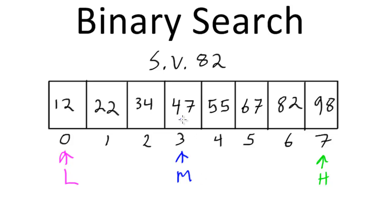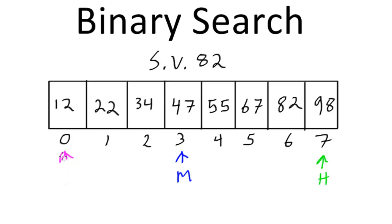We do a comparison between the value at the midpoint — which is 47 — and our search value. They're not equal, so we check whether the search value is greater than or less than the midpoint value. Since 82 is greater than 47, we update low to being one more than the midpoint. If instead we were looking for 22, the search value would be less than the midpoint and we would update high to one less than the midpoint. In our case, low gets updated to midpoint plus one.